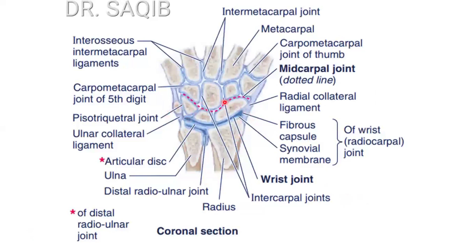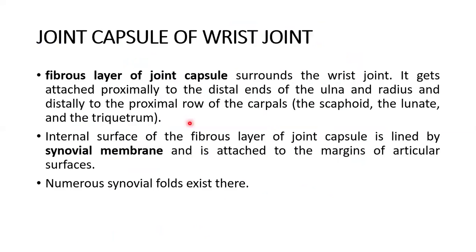Here you can see the radius and ulna, and this is the formation of the mid-carpal joint, and this is the wrist joint. Let's talk about the joint capsule of the wrist joint.